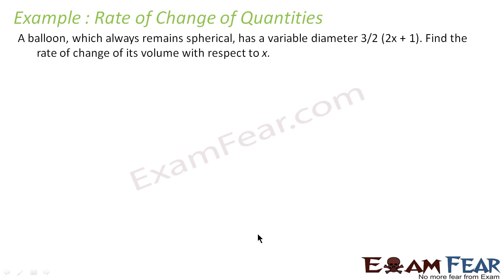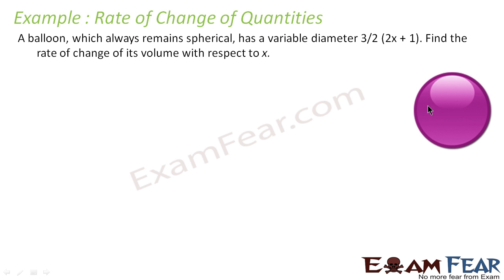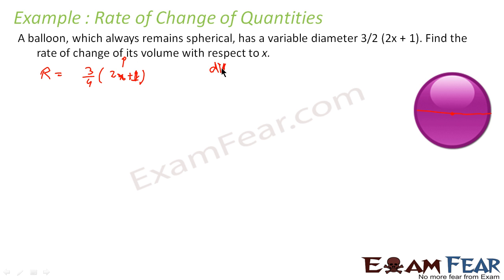Let's take one more example. The question says: a balloon, which is always spherical, has a variable diameter of (3/2)(2x + 1). So the radius is half of this: r = (3/4)(2x + 1). The radius is variable because it depends on x. The question asks us to find the rate of change of volume with respect to x, i.e., dv/dx.